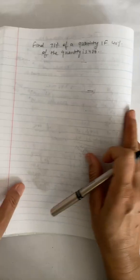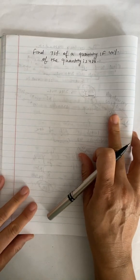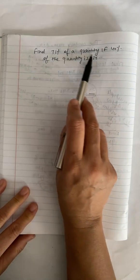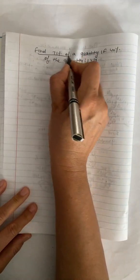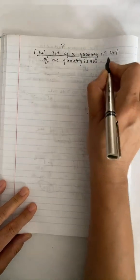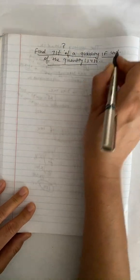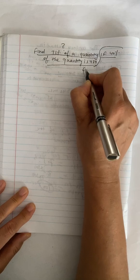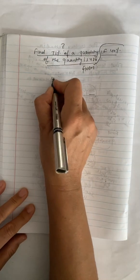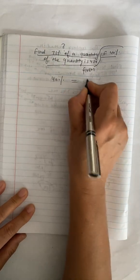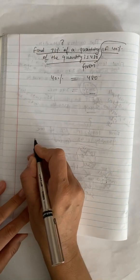Let's do another example. In this case, you have to find 71% of a quantity. If 40% of the quantity is 480, this is given. I am going to set up: 40% is equal to 480.